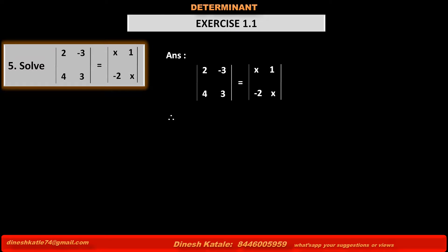Therefore, the equation becomes 2 into 3 minus 4 into minus 3, means product of the numbers of principal diagonals minus product of the numbers of secondary diagonal is equal to similarly x into x minus minus 2 into 1.